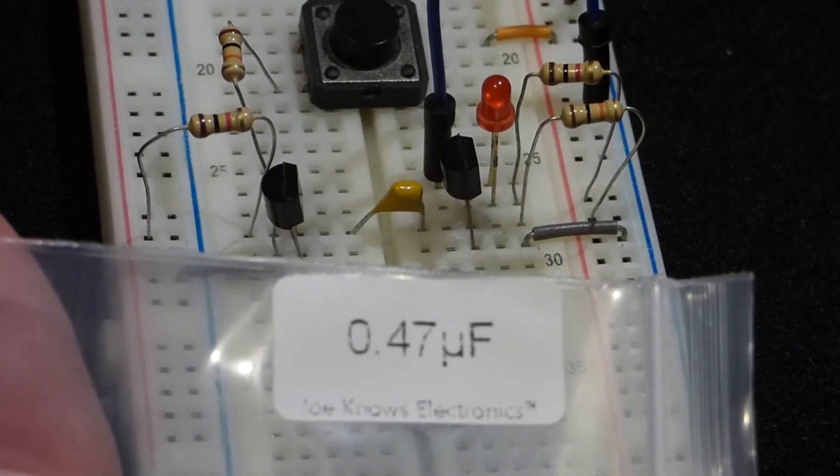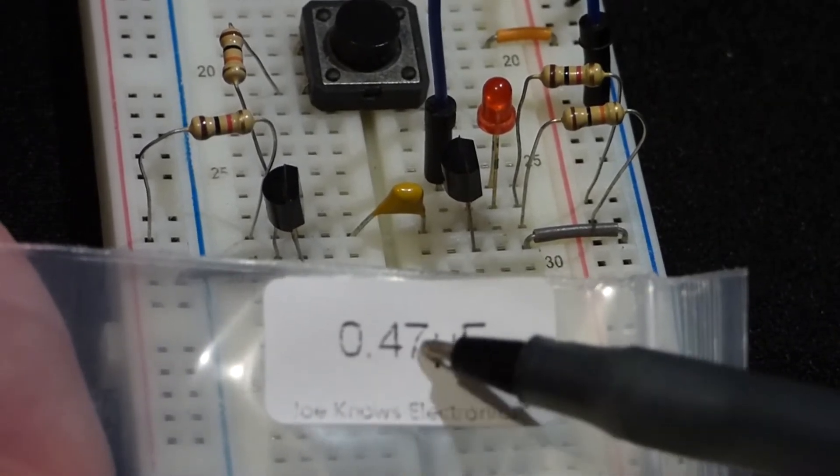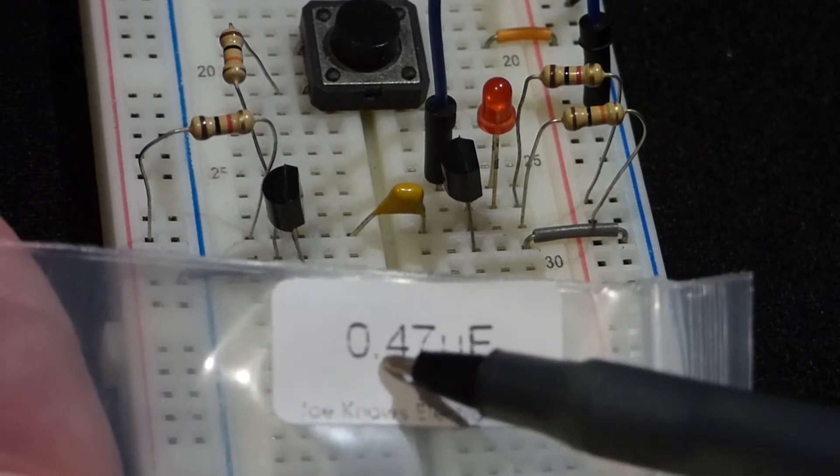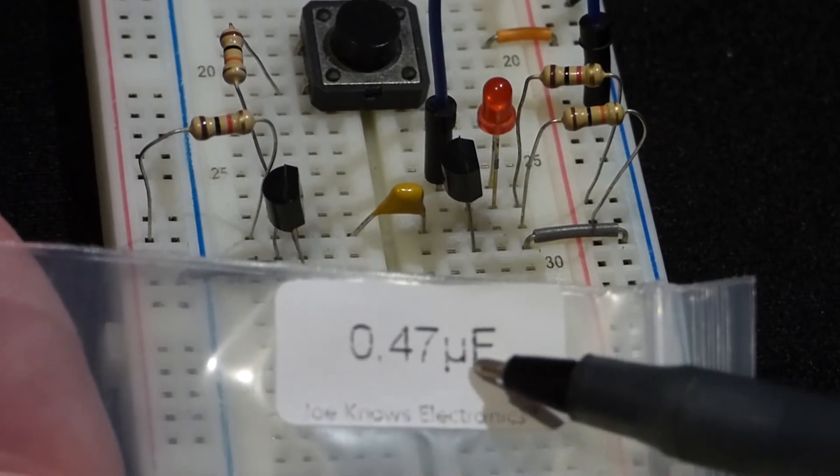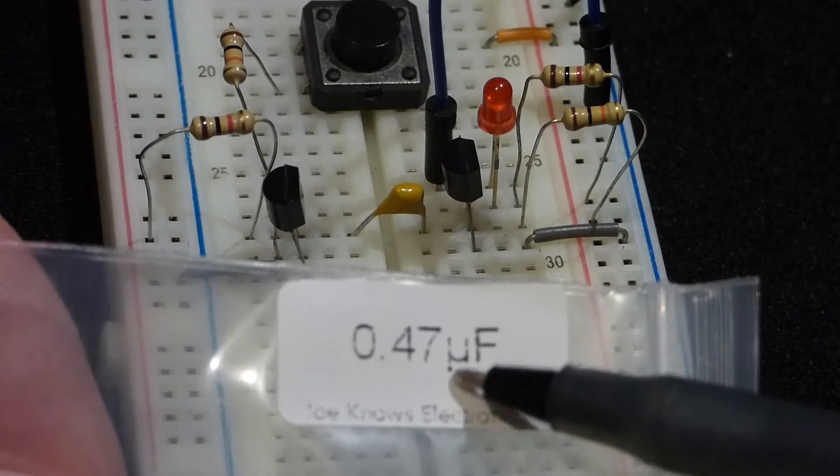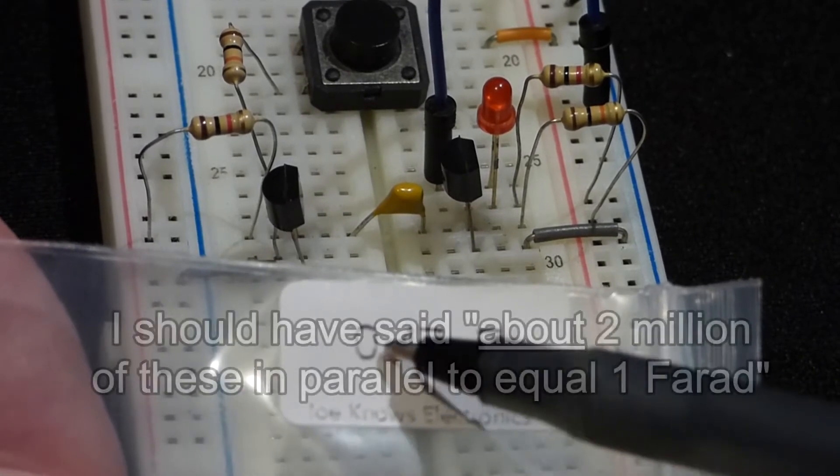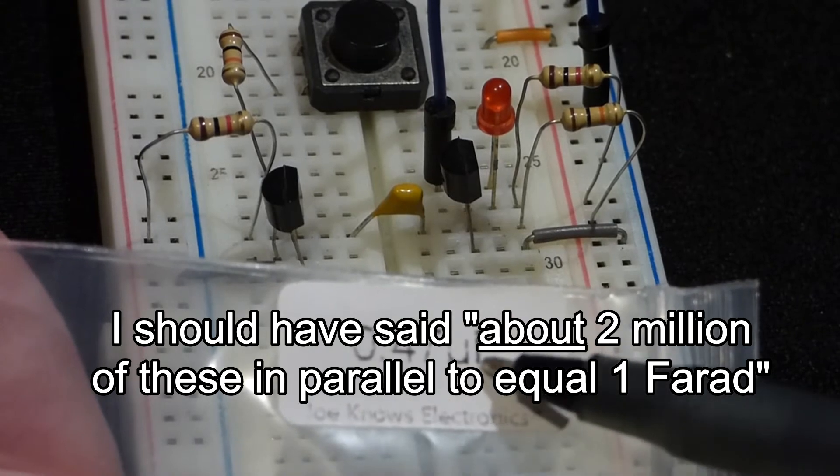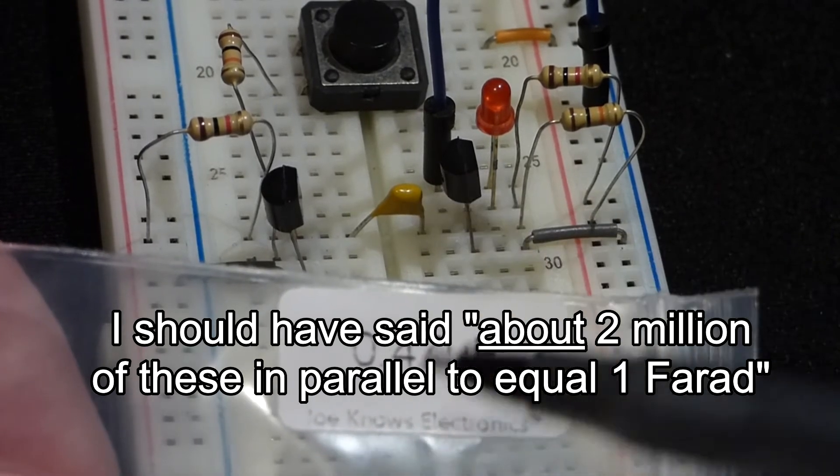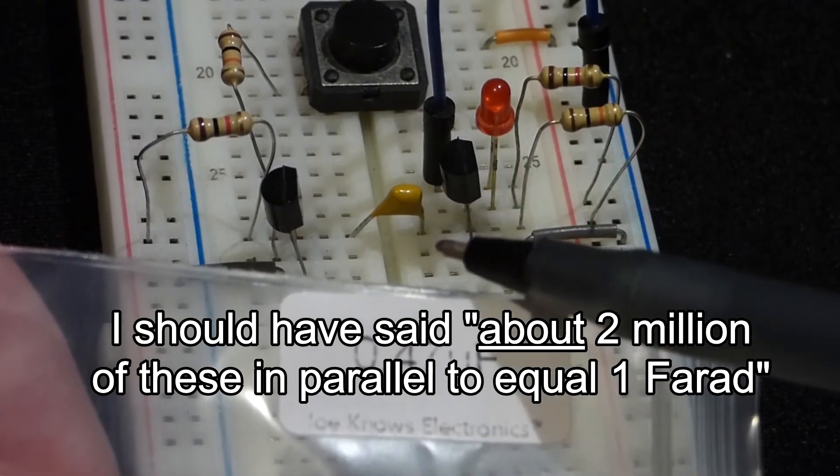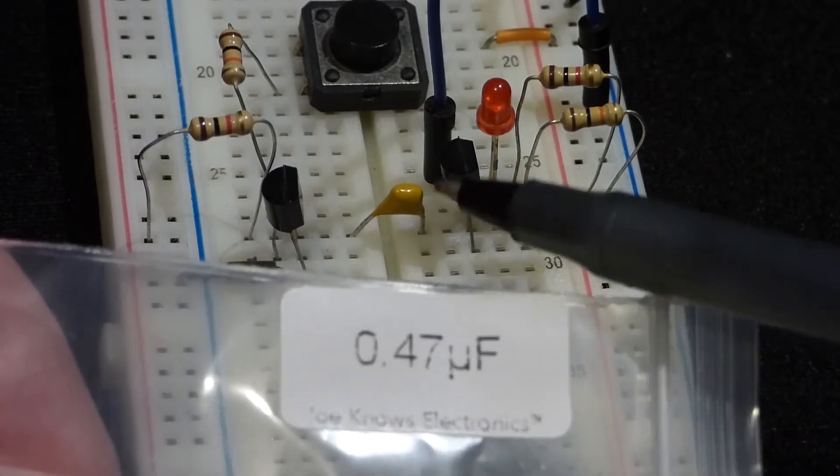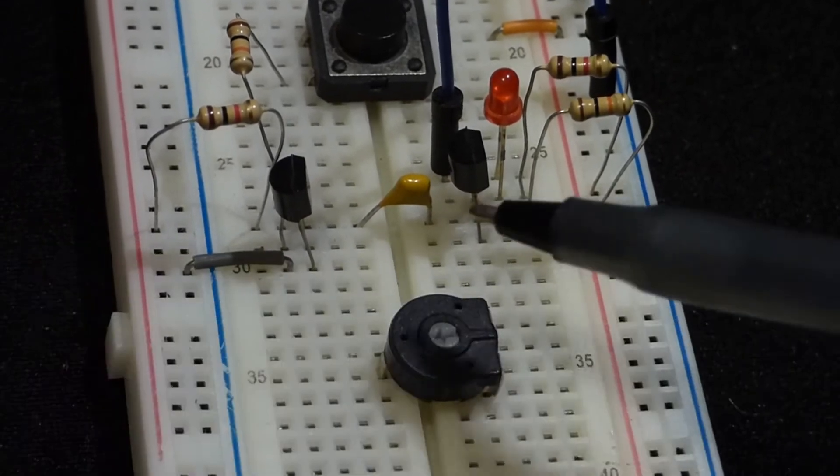So the capacitor is 0.47 microfarads, basically half of a microfarad. It takes one million microfarads to equal one farad. So we would need two million of these capacitors to equal a one-farad capacitor. That's if they were parallel. But in any case, this is a 0.47 microfarad capacitor.